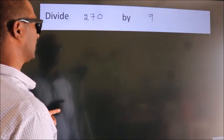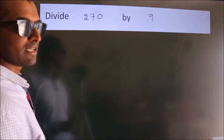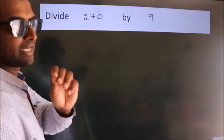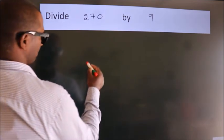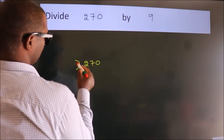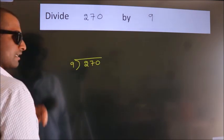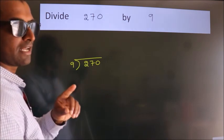Divide 270 by 9. To do this division, we should frame it in this way. 270 here, 9 here. This is your step 1.